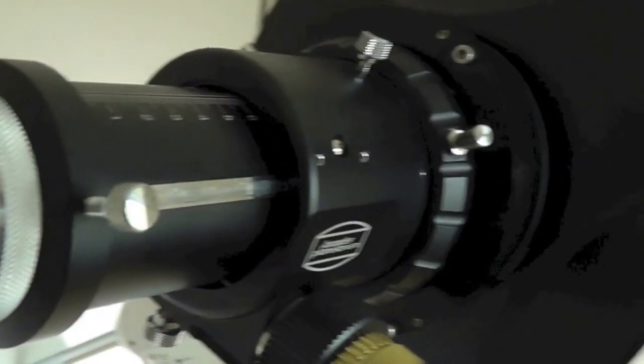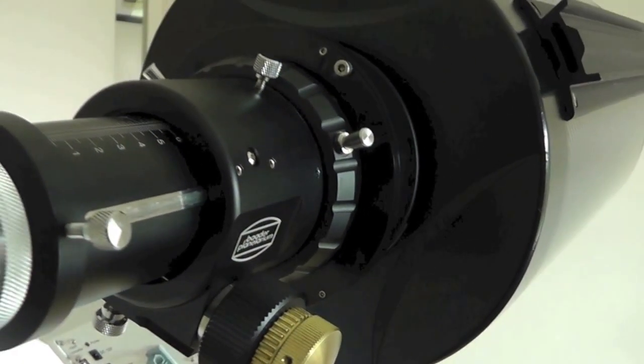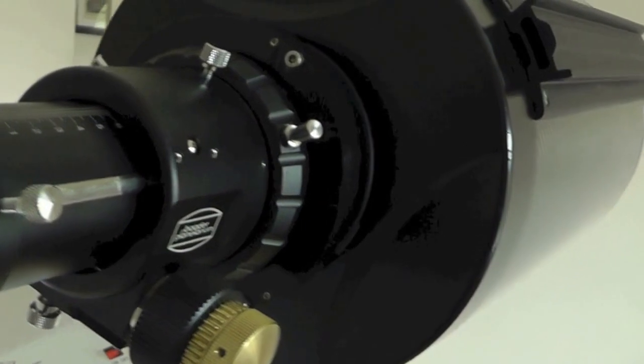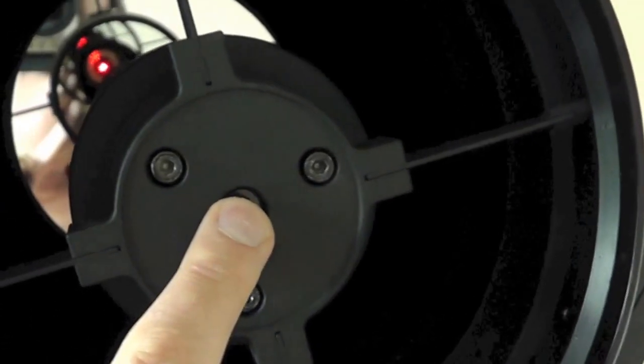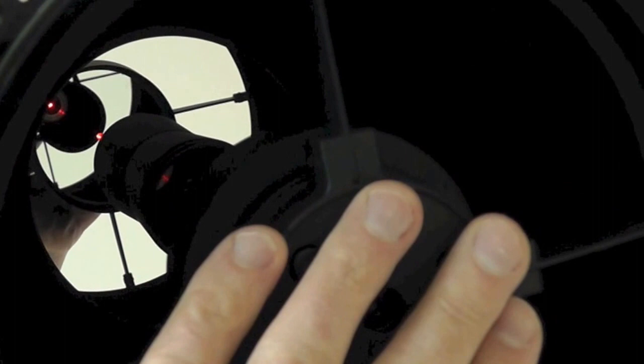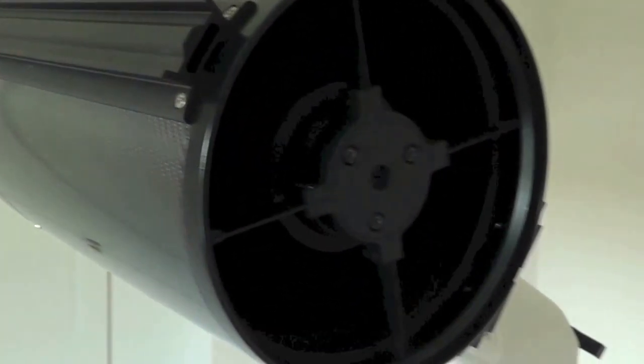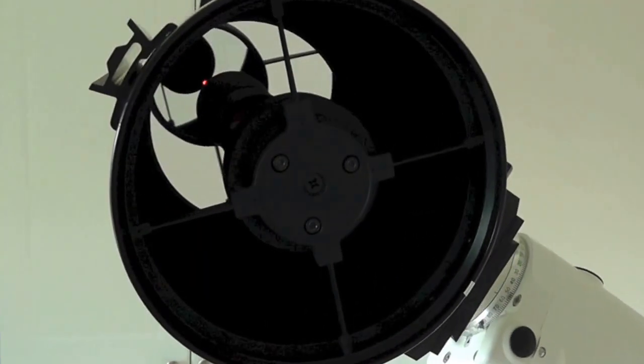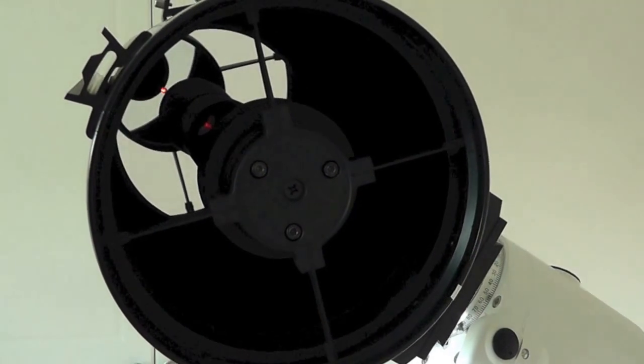So just to recap, all we're doing on this particular phase or step of the collimation is to collimate this focuser with respect to the center dot that's marked on this. That's all we're doing. We're not touching the secondary, we're not touching the primary. Okay, that's step number one complete. I hope you found that useful. Let's move on to step two.